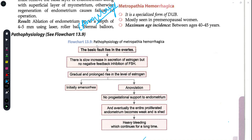What is metropathia hemorrhagica? This is a type of anovulatory dysfunctional uterine bleeding, which is mostly seen in pre-menopausal women whose age is between 40 to 45 years. In this condition, the basic fault lies in the ovaries.